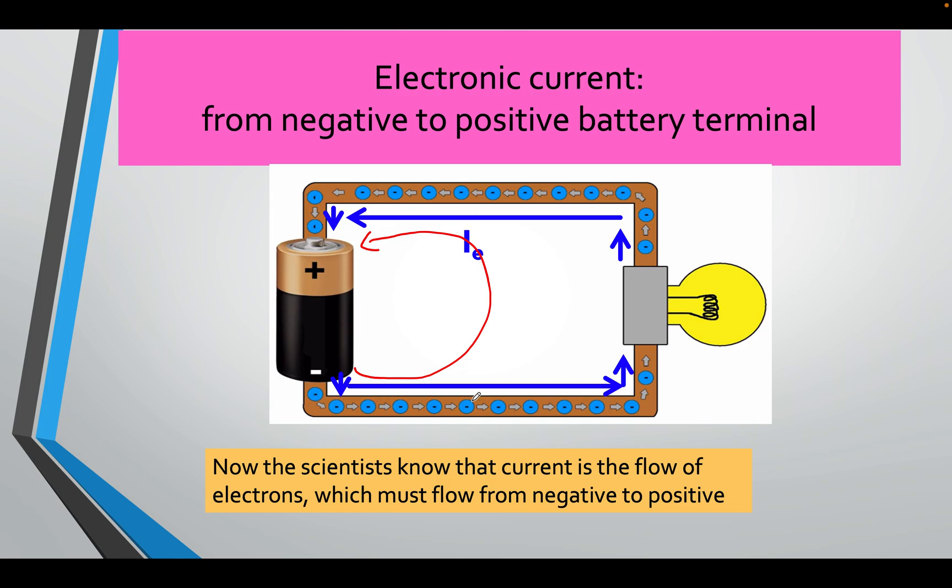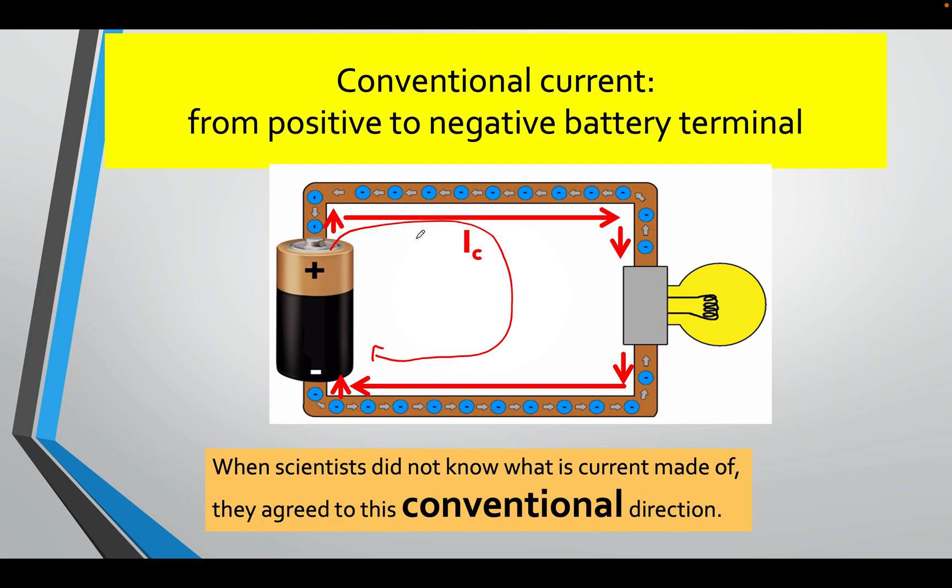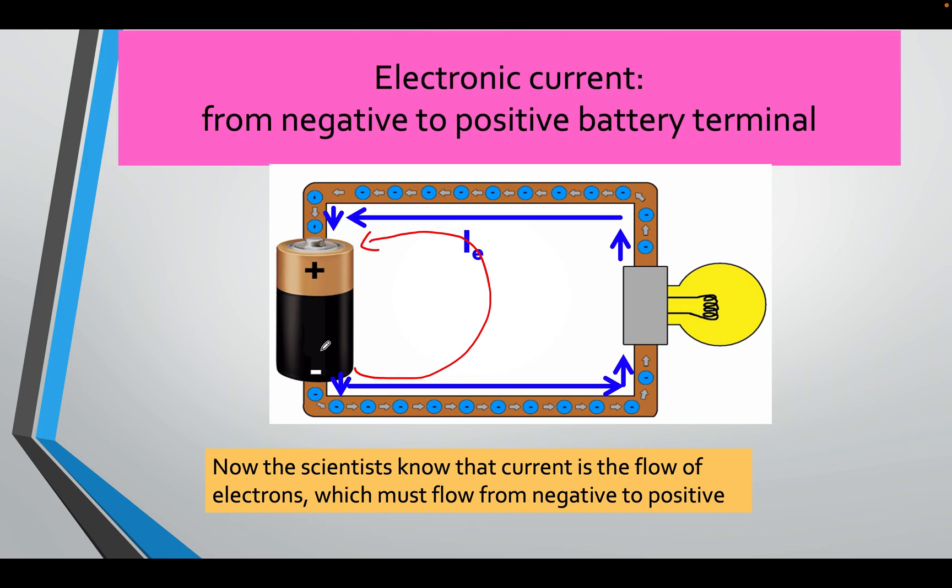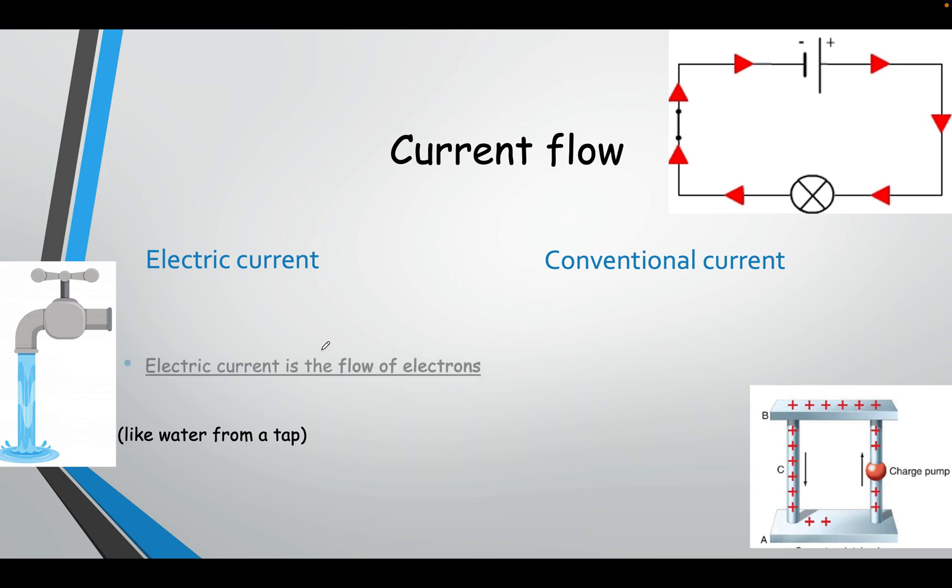So this is just the flow of negative charges, which is what we have recently discovered. And this is the flow of positive charges, which we thought at first was the case, but now we know it's not. But we're keeping to conventional. It makes it easier using the right-hand rules and things later on. So we're going to stick with conventional current.